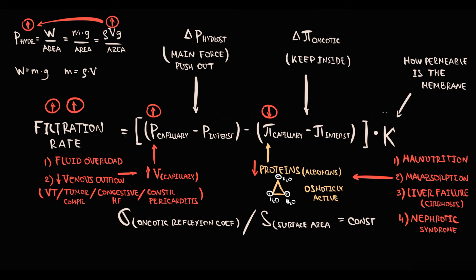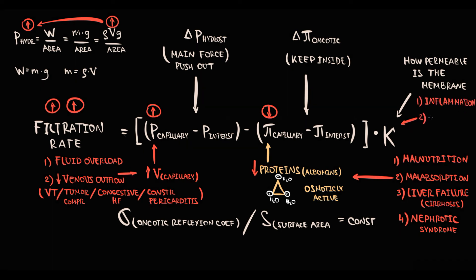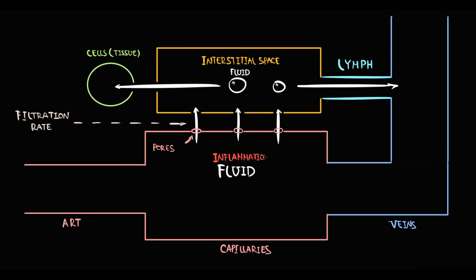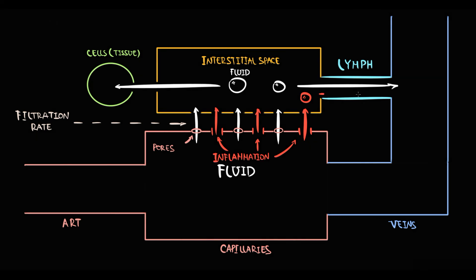The third factor determining filtration rate is hydraulic conductivity, which describes how easily fluid moves through the membrane. The two most common factors affecting hydraulic conductivity are inflammation and dilation of pores in the capillary. Inflammation causes damage to the membrane; the more damaged the membrane, the higher the fluid flow through it — that is, the higher the hydraulic conductivity. The higher the hydraulic conductivity, the greater the amount of fluid entering the interstitial space, and at some point fluid income exceeds lymphatic drainage, so fluid accumulates in the interstitium, causing edema.